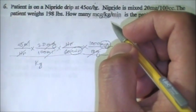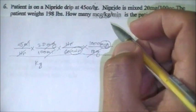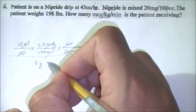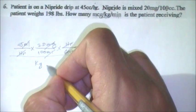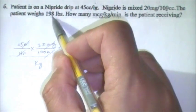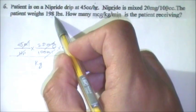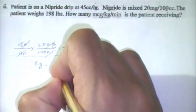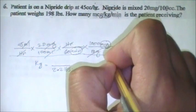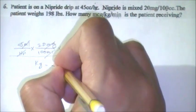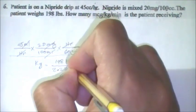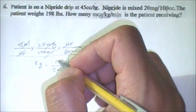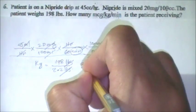We're almost halfway done, but we still need kilogram. Our patient's weight is in pounds, so we have to convert pounds to kilograms. One kilogram is equivalent to 2.2 pounds. The patient weighs 198 pounds, so we cancel pounds and divide 198 by 2.2, which gives us 90 kilograms.